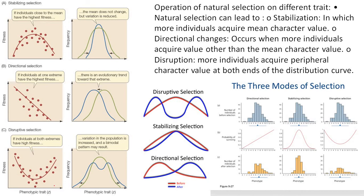In stabilizing selection, if individuals close to the mean have the highest fitness, the mean does not change but variation is decreased. In directional selection, if individuals at one extreme have high fitness, there is an evolutionary trend towards that extreme. In disruptive selection, individuals at both extremes have high fitness, variation of the population is increased, and a bimodal pattern may result.